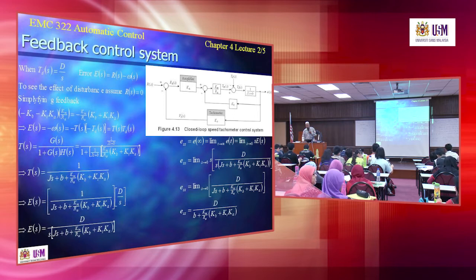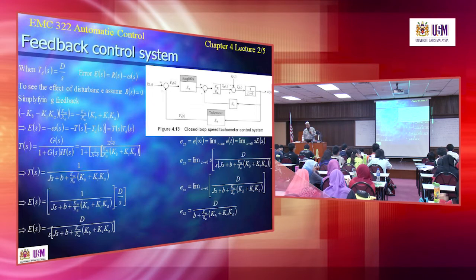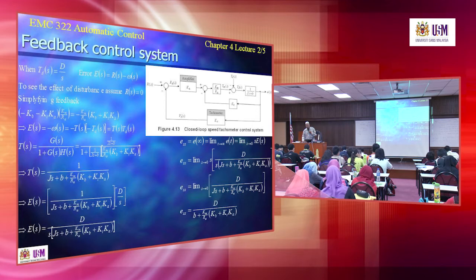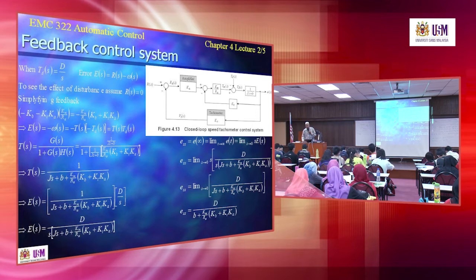Taking the limit as S approaches zero, anything multiplied by S becomes zero. So the J·S term disappears because J is multiplied by zero, leaving only the constant terms. The steady state error for the closed loop system is therefore a constant: D divided by (B plus KM/RA·(KB plus KT·KA)).